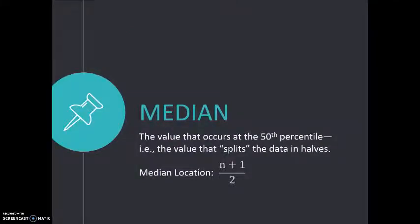The second option is the median. The median is the number that occurs at the 50th percentile. That is, it's right in the middle of your data. So this splits the data into two equal halves.